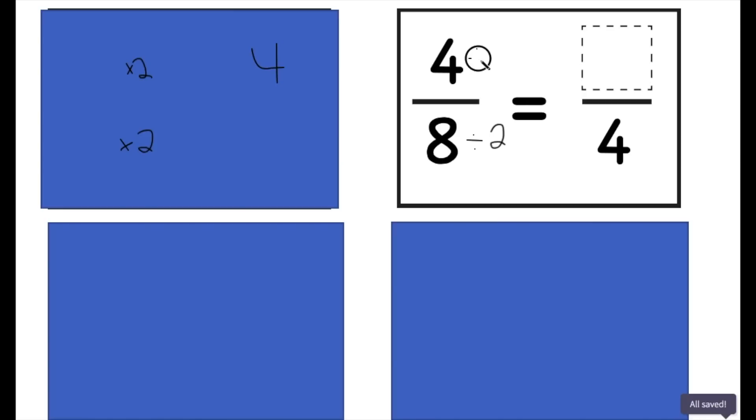So again, whatever I do to the denominator, I also have to do to the numerator. So 4 divided by 2 equals 2. So 4/8 is equivalent to 2/4.